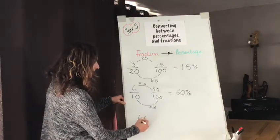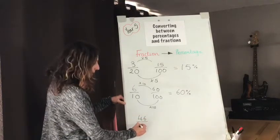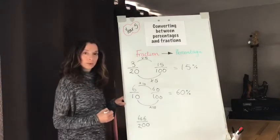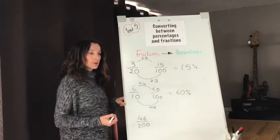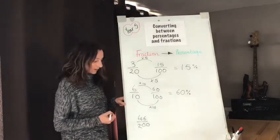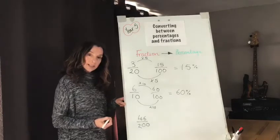If I started with 46 over 200 for example, it's the same process. I need to get to a denominator of 100 but this time I need to use division.